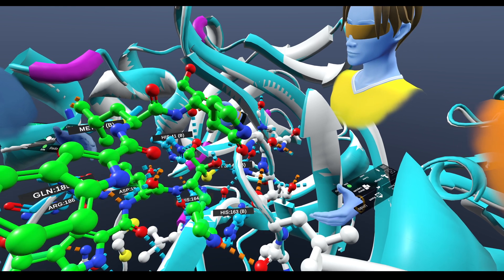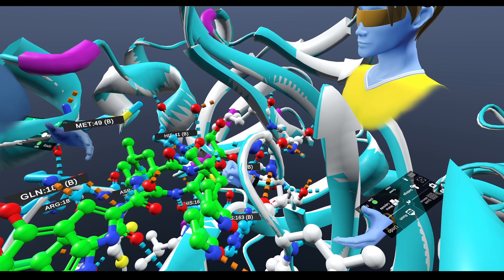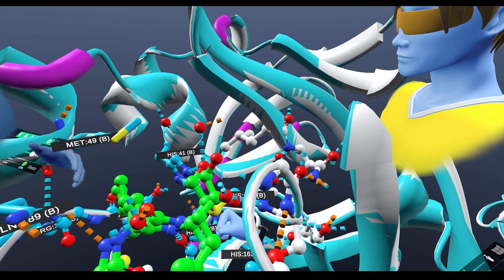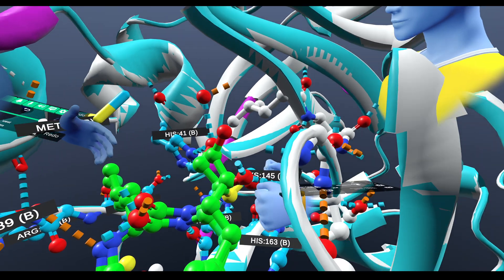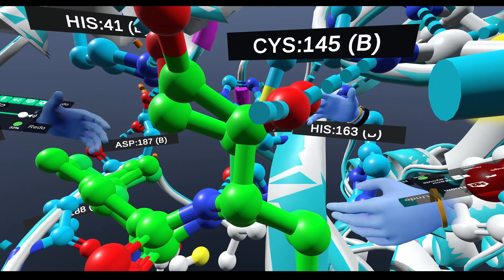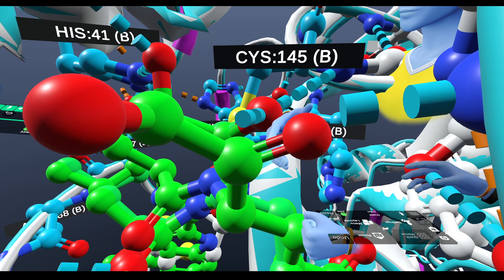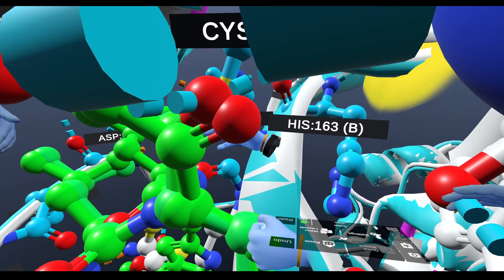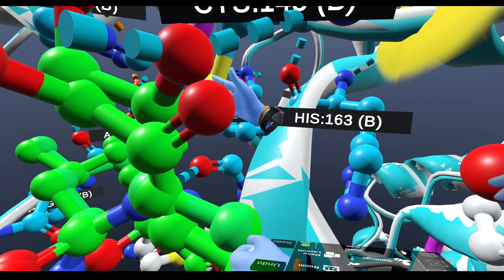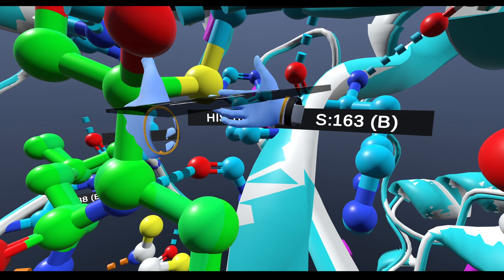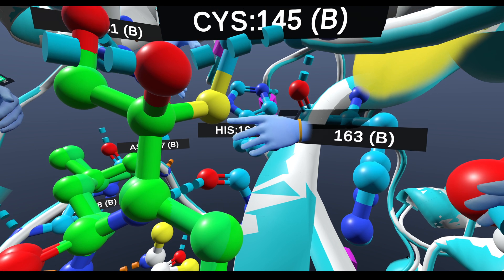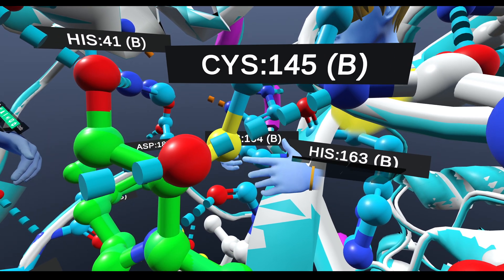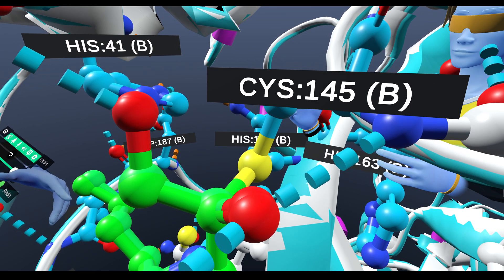So yeah, this drug would pretty much come and sit right in there where you see it kind of going in. But then the interesting thing that happens is right here, this double bond actually becomes a single bond when it goes through this covalent process. So when it goes into the binding pocket, this carbon as part of the drug forms a covalent bond with the sulfur that's part of this cysteine 145 residue.